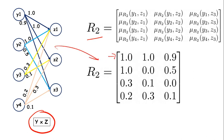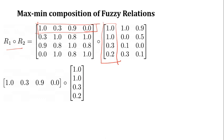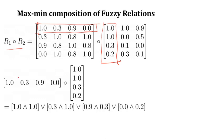Now we need to calculate the max-min composition between R1 and R2. The idea is we take the matrix multiplication technique — take the first row and the first column. Instead of multiplying each element, we take the min operator. So we take 1.0 and 1.0 and apply the min operator. We do the same thing for the rest of the elements, and when you apply this operator you get a single value — in this case 1, because both values are equal.